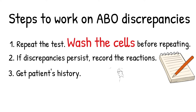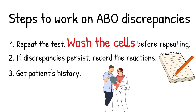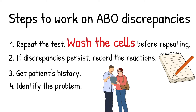Third, get patient history like patient age, recent transplant, recent transfusions, or any health conditions that the patient has. Fourth, identify if the problem is coming from the patient's forward type or reverse type by looking at the reactions. Ask yourself if you are looking at weaker than expected reactions or a missing reaction. Then follow the guidelines as we talked about in the previous video.